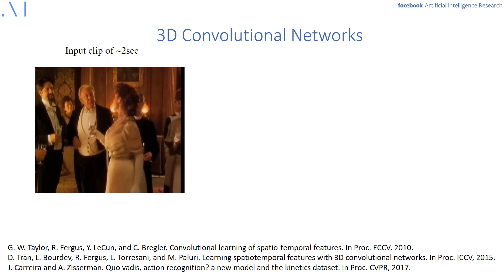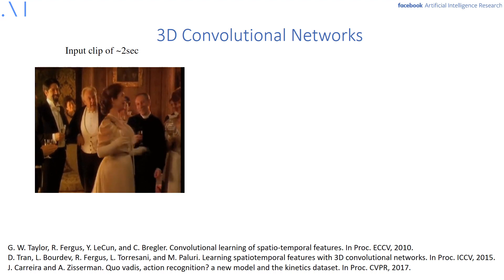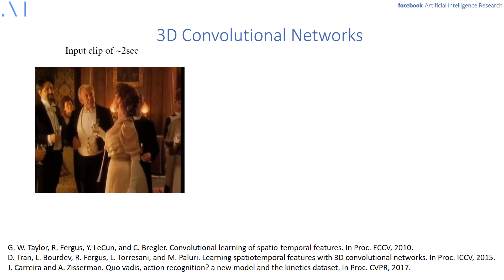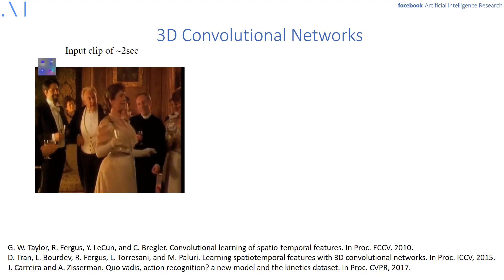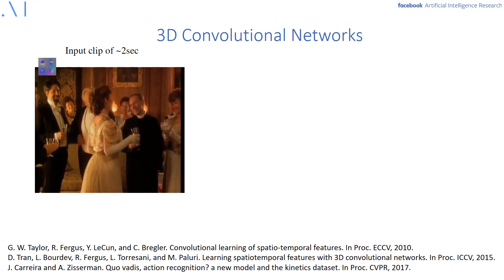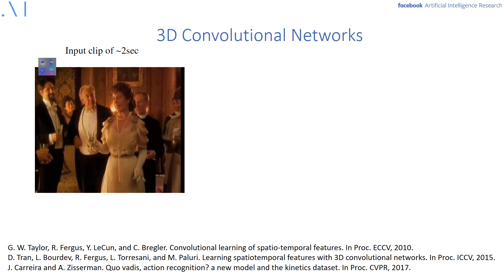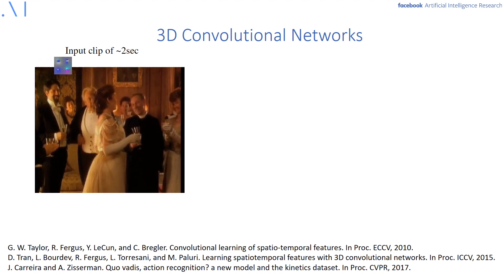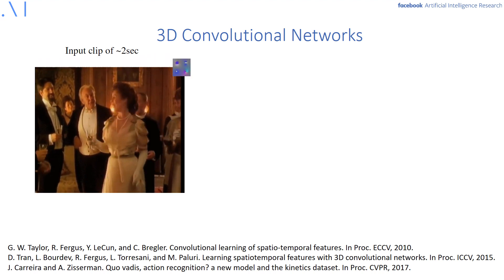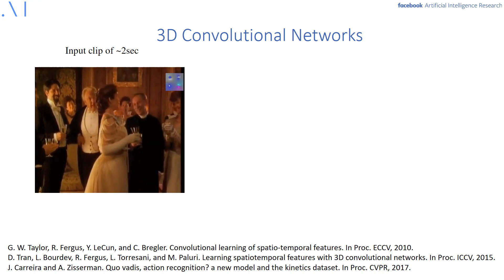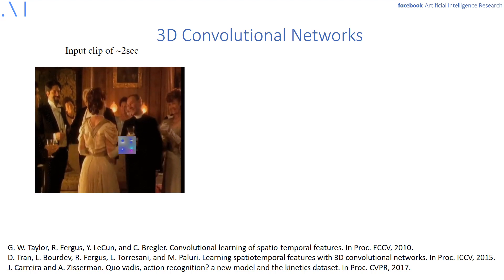Video classification is typically done with 3D convolutional networks. The basic idea of these models is to have a spatial-temporal filter bank and then to spatial-temporal convolve an input video clip. This is similar to image classification, only that now you have a third temporal dimension.